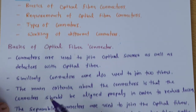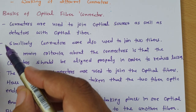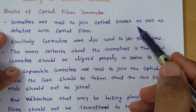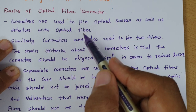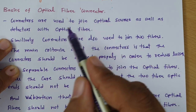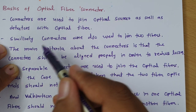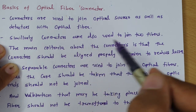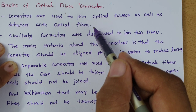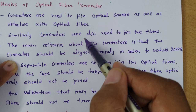The first agenda is basics of optical fiber connector. Basically, connectors are used to join optical sources as well as detectors with optical fiber. There are two basic categories: one is to join source as well as detector with fiber, and the second category is to join two optical fibers together.